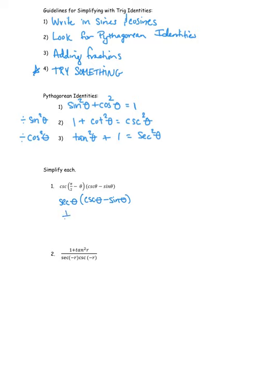Secant is 1 over cosine, and cosecant is 1 over sine. Sine is already in terms of sine — I'll write it as sine over 1 just to remind myself it's a fraction. I have a couple of options: work inside the parentheses and then multiply, or distribute and get a common denominator. I'm going to try distributing. The first fraction will be 1 over cosine·sine, and the second fraction will be sine over cosine.